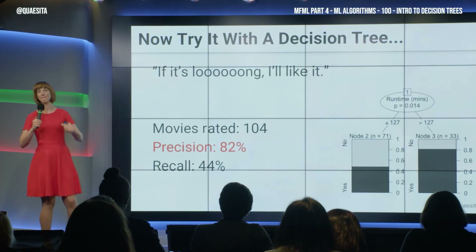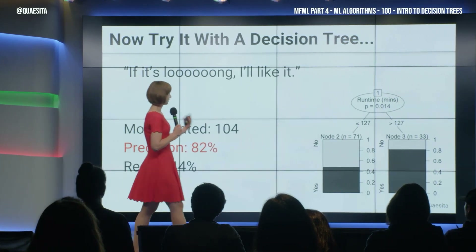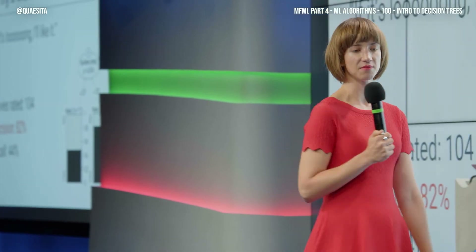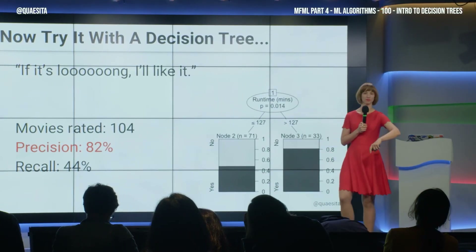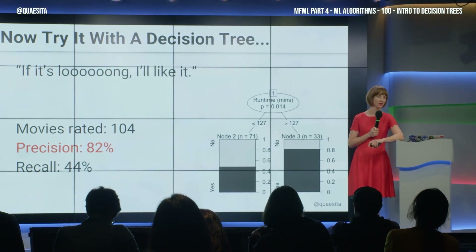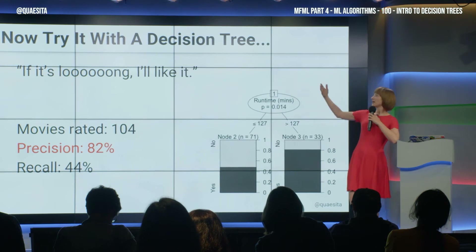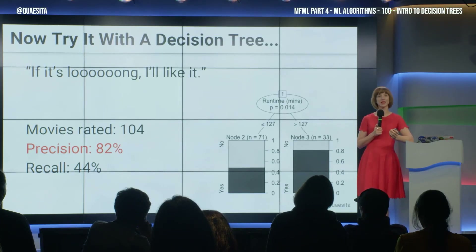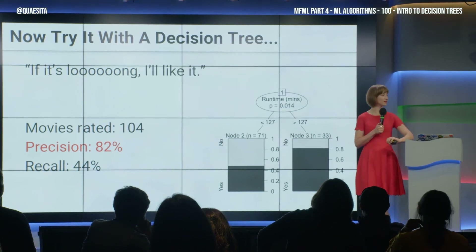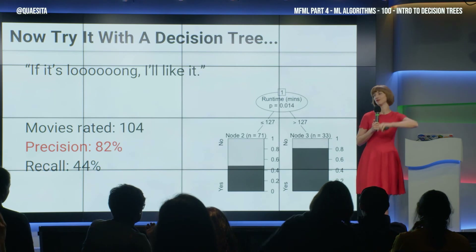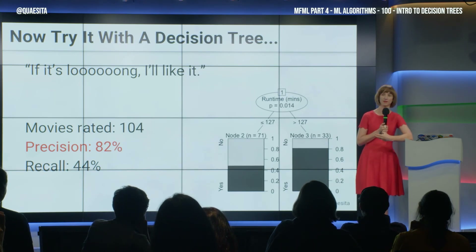Now, what does this mean? Well, from a data science standpoint, the only thing it means is that in these data, this rule outperforms my other rule. There is no other thing that it means. If I'm tempted to start spinning stories about how maybe this means something about directors investing more effort in longer movies and so the quality is whatever — if I'm tempted to make such stories, I need to be aware that I'm in danger of overfitting. I shouldn't take myself seriously unless I carefully articulate that story as a hypothesis and test it in another data set. If it holds there, then it holds.